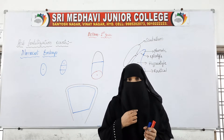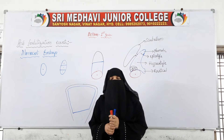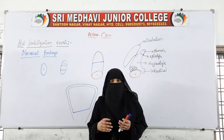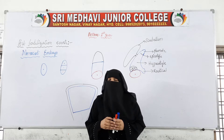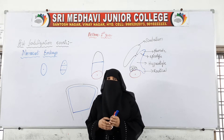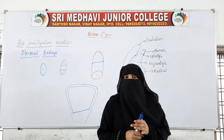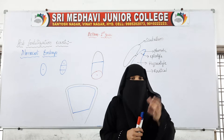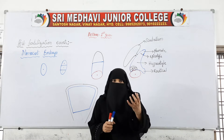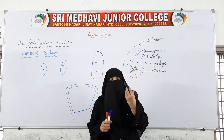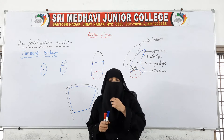The zygote will start to develop into an embryo only after the endosperm is formed. Endosperm is the nutritive tissue which provides nutrients for the growing embryo. It is rich in nutrients and is made just for this developing zygote. The zygote will then change into the embryo.